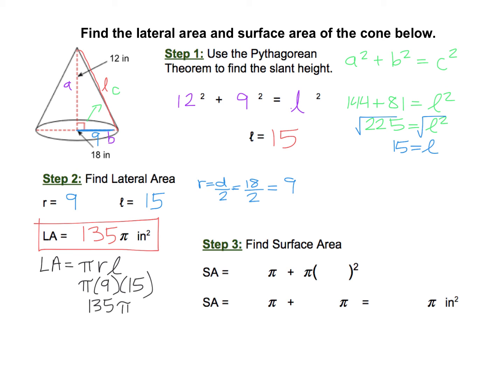Now that we have our lateral area, we're ready to calculate the surface area. Remember, the formula for the surface area is SA equals LA plus pi r squared. That's the lateral area plus the area of the circular base. If we take our answer here from step two, our lateral area was 135 pi. And then we need to add pi times r squared. r is, once again, 9. So we have 135 pi plus, and then 9 squared is 81. So 81 pi.